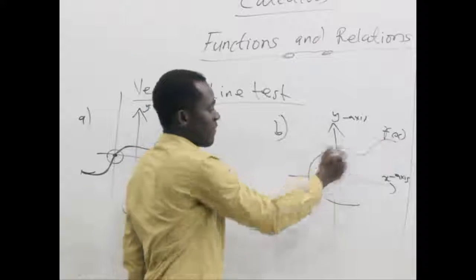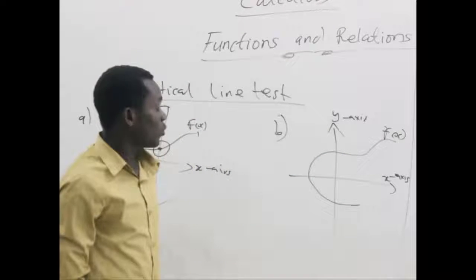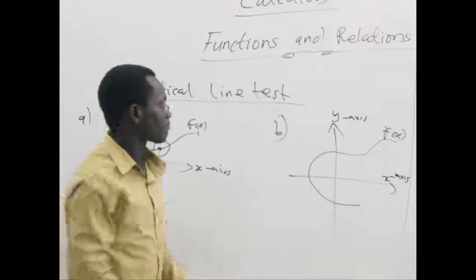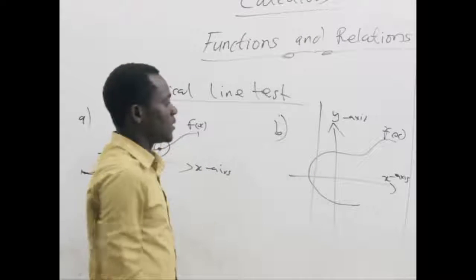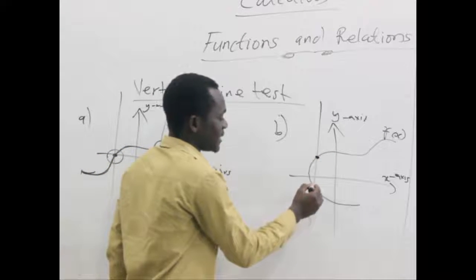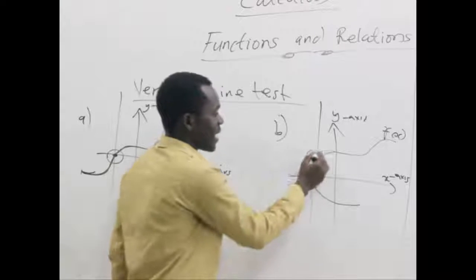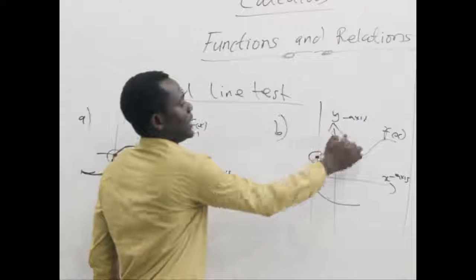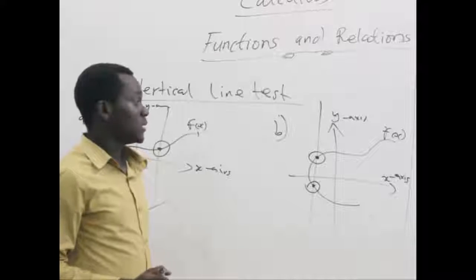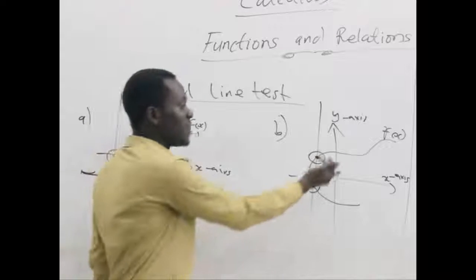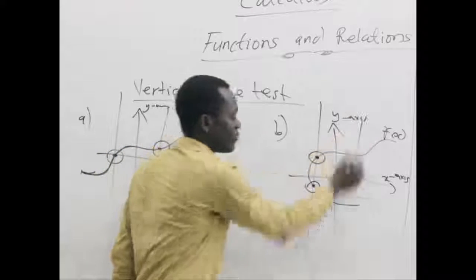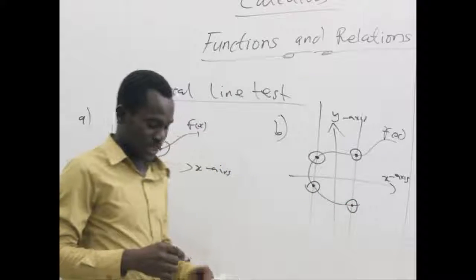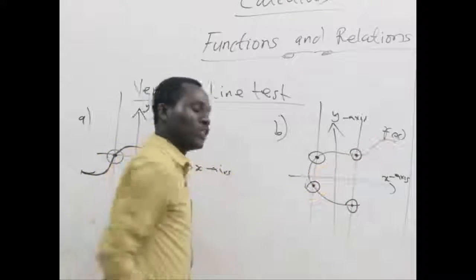Now let's come to graph B, where another function is plotted. Let's try to see whether it passes the vertical line test or not. The vertical line intersects the graph at exactly two points or places. This shows that this particular graph is not a real function — it may be a relation but not a function. Another vertical line also intersects it more than once, so this type of graph is not a function.